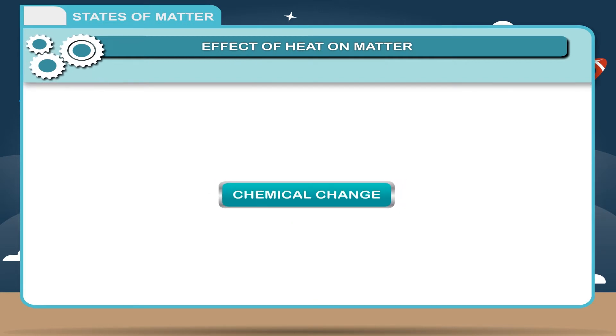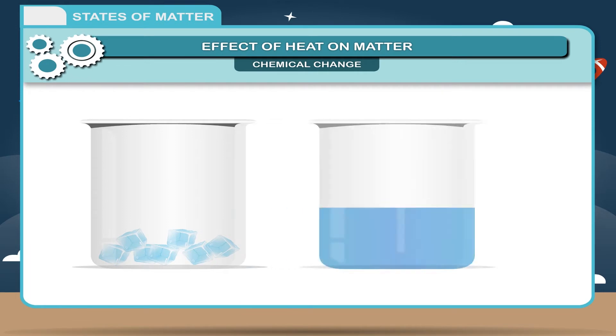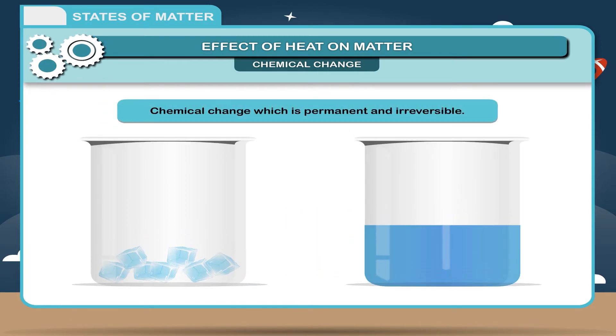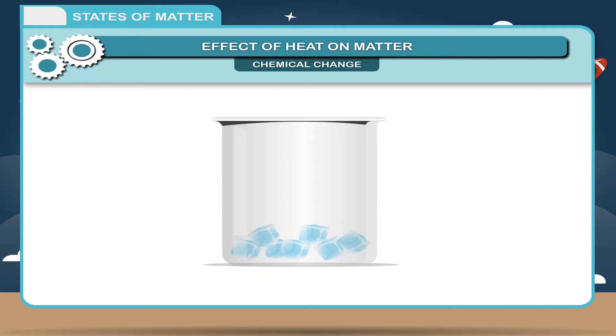Chemical Change. You are already aware of physical change, which is not permanent and reversible, and chemical change, which is permanent and irreversible. A change of state of matter is an example of physical change which is reversible. Ice can be melted to form water, and water can be frozen to form ice again.